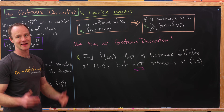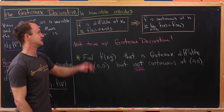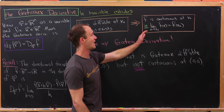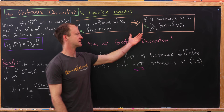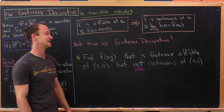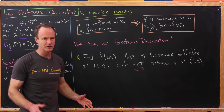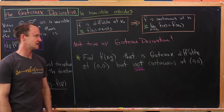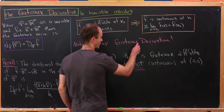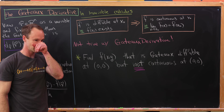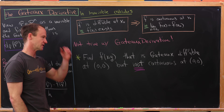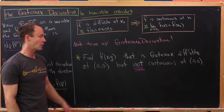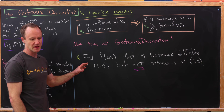The Gâteaux derivative shares some properties with the regular derivative, but not all of them. In particular, in one-variable calculus we have the result that if f is differentiable at a point x₀ — meaning f'(x₀) exists — then f is continuous at x₀, i.e., the limit as x → x₀ of f(x) equals f(x₀). But this is NOT true with the Gâteaux derivative, so we should be able to find a function that is Gâteaux differentiable somewhere but not continuous there.